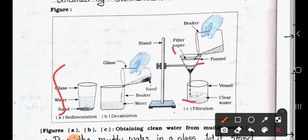And here see, this is the beaker. And here it is one vessel. And then due to the filter paper, it is filtered. Then clear water we get.